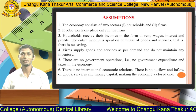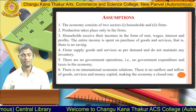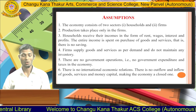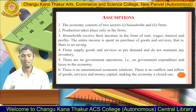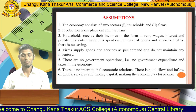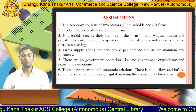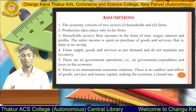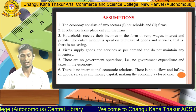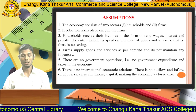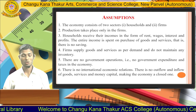There are certain assumptions for this model. First, the economy consists of two sectors — households and firms. Second, production takes place only in the firms. Third, households receive their incomes in the form of rent, wages, interest, and profits. The entire income is spent on the purchase of goods and services — that is, there is no saving.